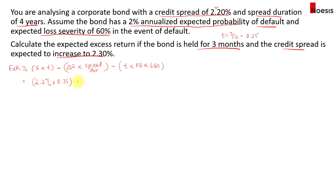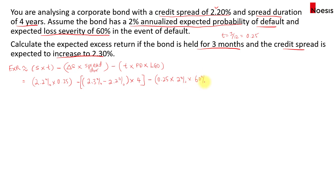However, we expect the spreads to increase to 2.3%, which means an increase of 10 basis points. So we take 2.3% minus 2.2% — this is the increase in spreads — multiplied by the spread duration of 4. There will be a loss from the increase in spreads, and then we minus the expected loss from defaults. That's 0.25 multiplied by the 2% default rate multiplied by the 60% loss severity.